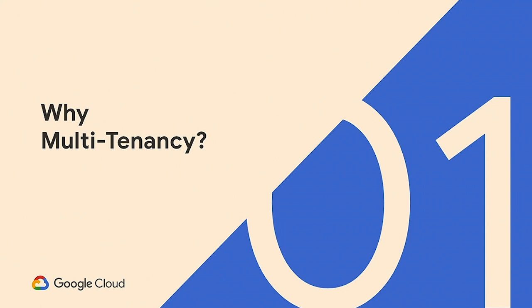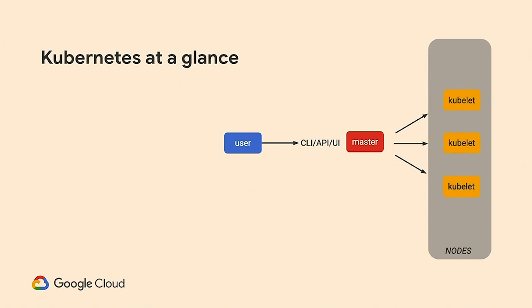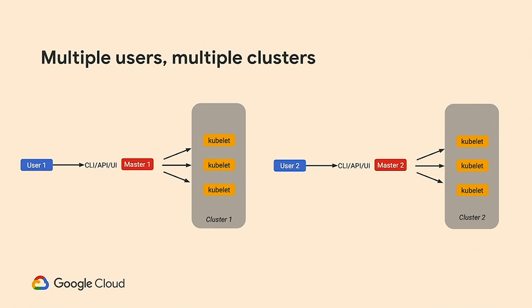Let's talk about why multi-tenancy. At a glance, Kubernetes is a user or set of users interacting with a master. The master holds the API server, the scheduler, and other things, and is responsible for managing a set of nodes that run your actual application. When you have one cluster and one user, things are relatively straightforward. But what happens when you have multiple users and multiple clusters — many teams running different applications, or even external customers running different applications?